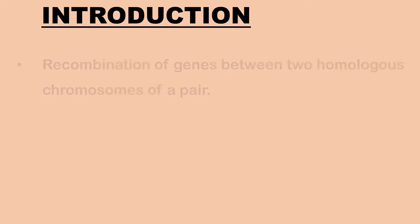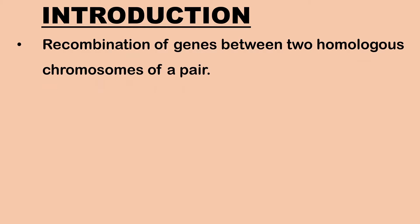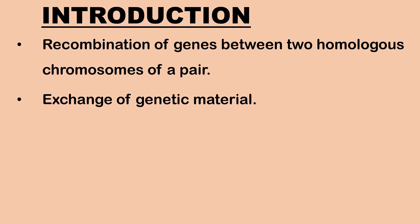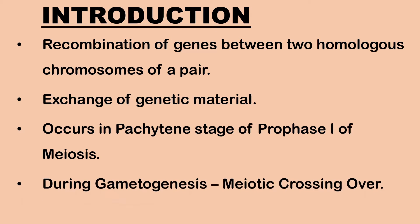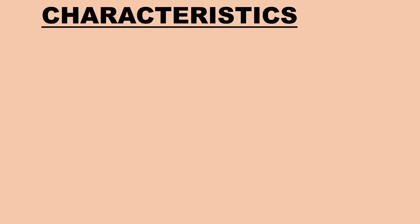Let us begin with the introduction to crossing over. In meiosis, crossing over is the recombination of genes between two homologous chromosomes of a pair. As exchange of genetic material takes place, it results in non-identical chromatids. Crossing over occurs in the pachytene stage of prophase one of meiosis. During gametogenesis, meiotic cell division occurs; crossing over takes place in the germinal cells and is known as germinal or meiotic crossing over.